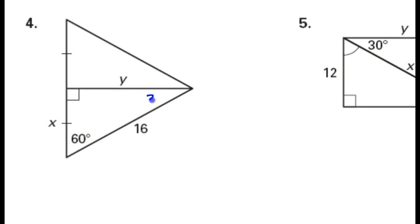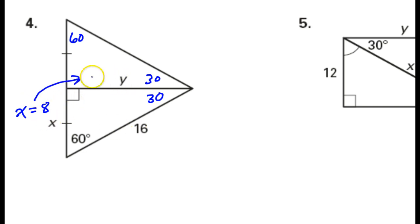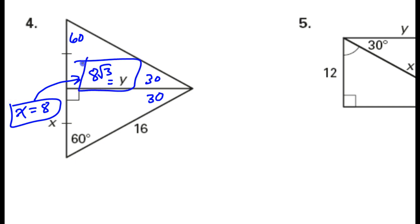Looking at number 4 — I see this is a 60, so that means that this is a 30-60-90 triangle. These are marked the same, so this must also be a 30-60-90 triangle. They gave me the hypotenuse is 16. So the short leg must be half of that — this must be 8. To get the long leg, I do the short leg times radical 3, so this must be 8 times radical 3. So x is equal to 8 and y is equal to 8 radical 3.